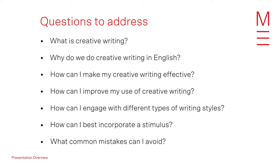In terms of creative writing, a couple of problems and questions we need to address include: what is creative writing, why do we do creative writing in English, how can I make creative writing effective and purposeful, how can I improve my use of writing techniques and written expression, how can I engage with different types of writing styles and forms, and how can I best incorporate a stimulus — especially when it's an unseen assessment — and what common mistakes can I avoid? Unpacking these questions points us to seven areas or chapters to consider.